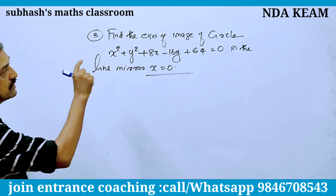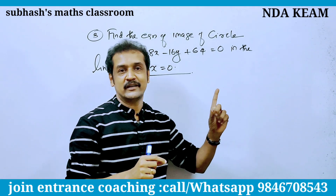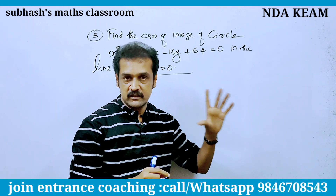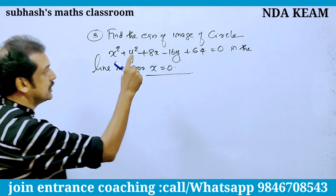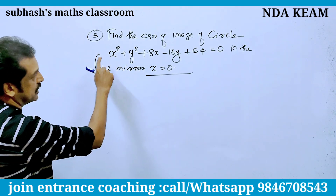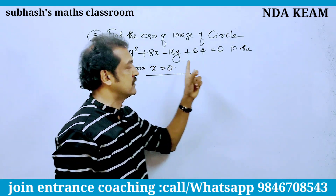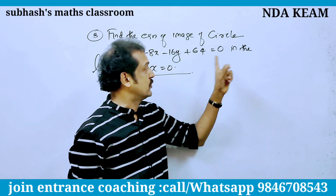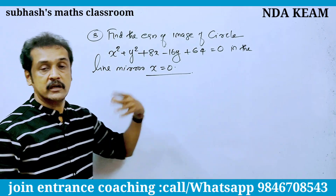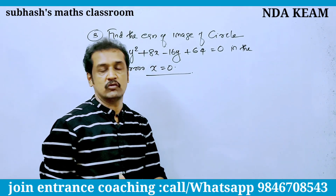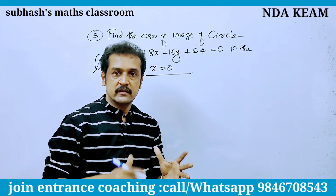Let's find the equation of the image of the circle. The image of the circle is x² + y² + 8x − 16y + 64 = 0. In the line mirror, the angle equals 30°.